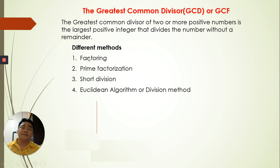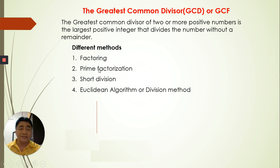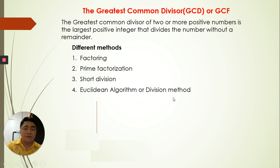We have four different ways or methods to find the GCD or GCF. We have the factoring method using all natural numbers, we have prime factorization, we have short division, and the Euclidean algorithm or division method. So let's start with factoring.